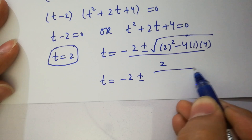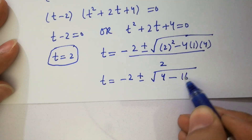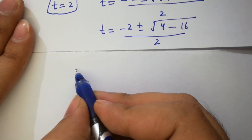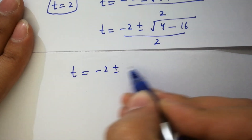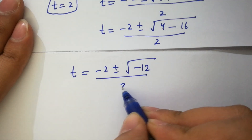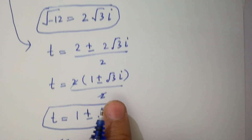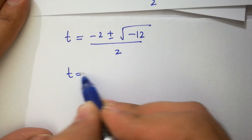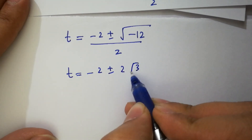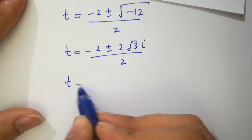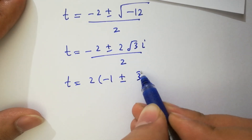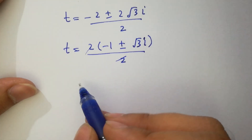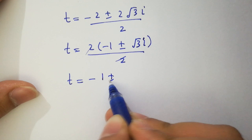So we have t equals minus 2 plus or minus square root of 4 minus 16, which is minus 12, over 2. Since square root of minus 12 equals 2 square root of 3i, t equals minus 2 plus or minus 2 square root of 3i, over 2. The 2s cancel, giving t equals minus 1 plus or minus square root of 3i.